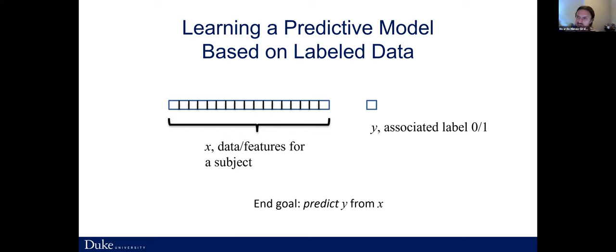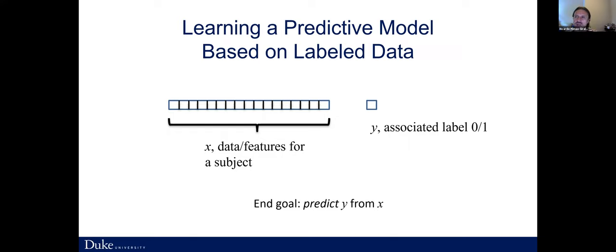Imagine we have a collection of measurements, which we'll call X — features about an image or an individual. That collection of features, which is a vector, we call X. For each one, we have a label, and for simplicity let's assume the label is binary: zero or one, yes versus no, case versus control. Given the features X, we want to guess the value of Y — specifically, we want to calculate the probability that Y equals one given the features. That is the process we call prediction.